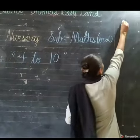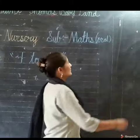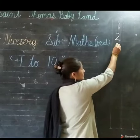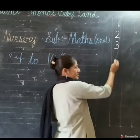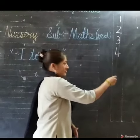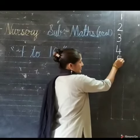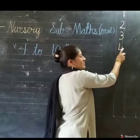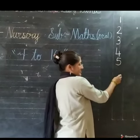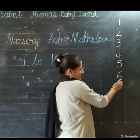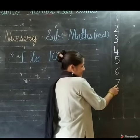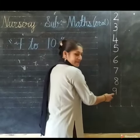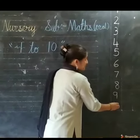Okay. What is this? 1. 1 after 2. And 2 after 3. 3 after 4. 4 after 5. 1, 2, 3, 4, 5. 5 after 6. 6 after 7. 7 after 8. 8 after 9. 9 after 10.